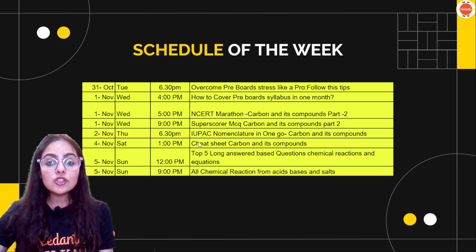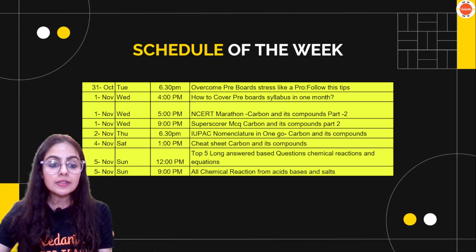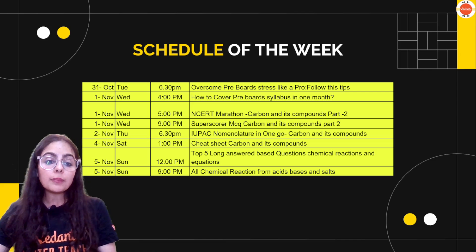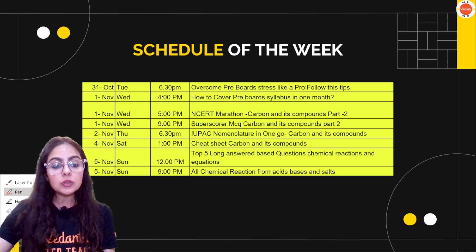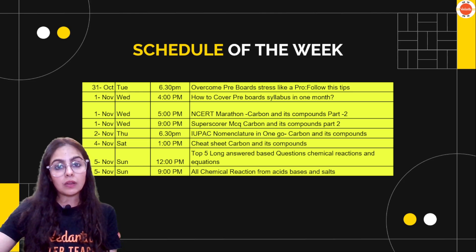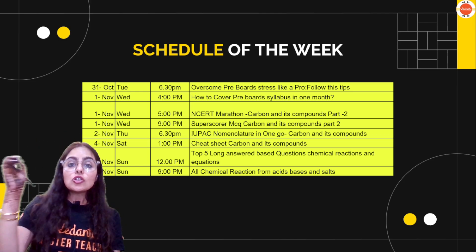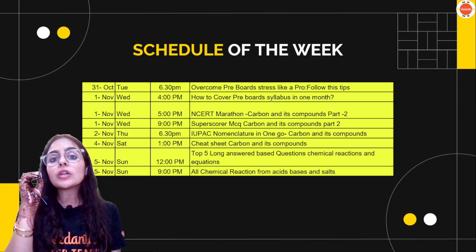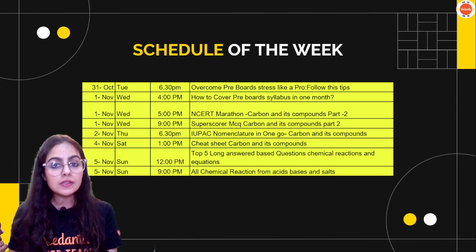Coming up will be your top five long answer based questions of chemical reactions and equations. Here I will talk about how you can underline keywords, how you can determine keywords, and where you can lose marks — all of those small details will be discussed with you in this session.